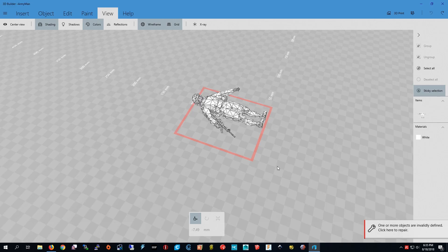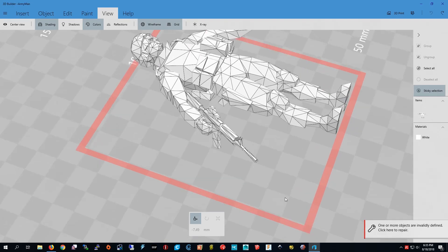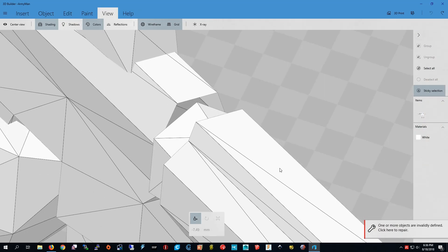Open the model in 3D Builder. And it said there are errors. And look right here, there's a hole in the gun.